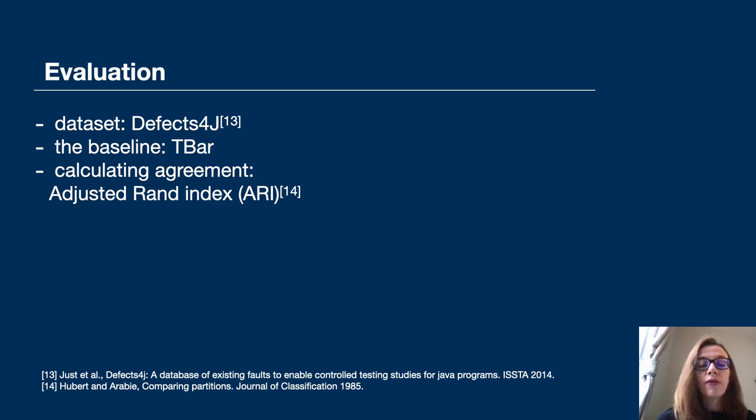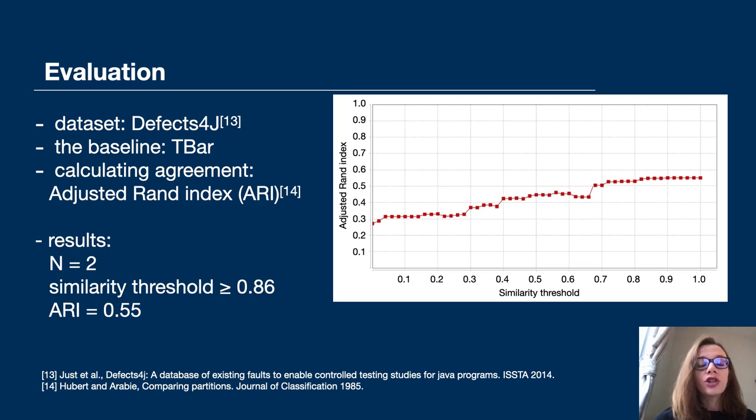Adjusted rand index can have values from minus 1 to 1, where 0 is for random clustering, everything below 0 is worse than random clustering, and 1 is for perfect clustering, perfect agreement between clusters. Our results show that the best agreement between our clusters and the clusters extracted from T-bar are for n-grams length 2, when the similarity threshold is greater than or equals to 0.86, and the value of the adjusted rand index was 0.55.